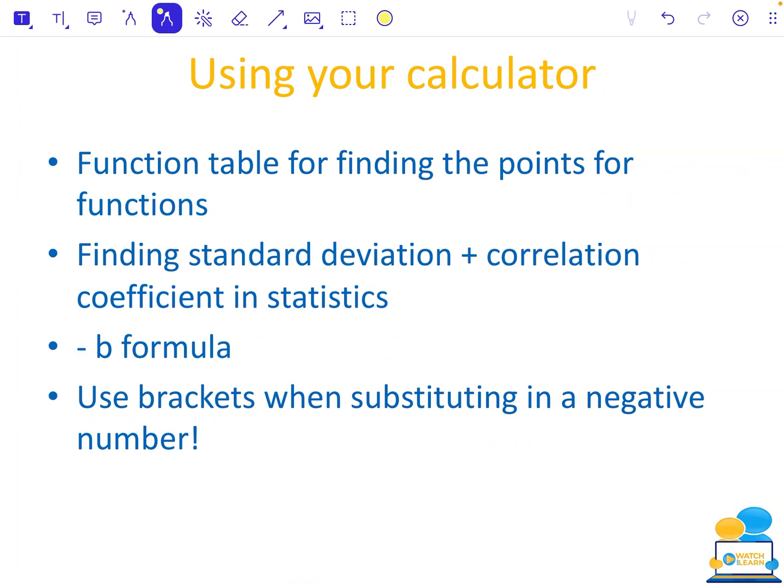One other point is using your calculator. It sounds basic, but a lot of mistakes can be made in your calculator and they are annoying marks to lose. You can use it for a function table for finding the points for your functions, finding the standard deviation and correlation coefficient in statistics, minus B formula. Sometimes people find it hard to put it into their calculator. So just practice on your calculator and using brackets when substituting in a negative number in all chapters. Brackets are your calculator likes brackets. You're much more likely to ensure you get the right answer if you have brackets. My only other advice for a calculator would be do not buy a new and different calculator between now and the exams. If you are buying a new one, make sure you buy the same make and the same model, because if you learn how to do things on one calculator, there are slight variations between them.